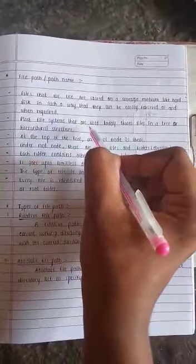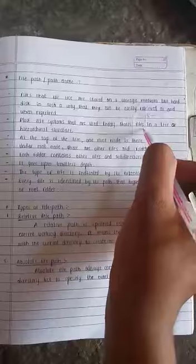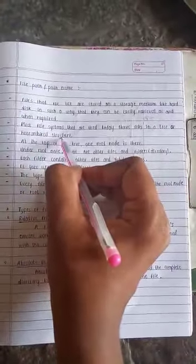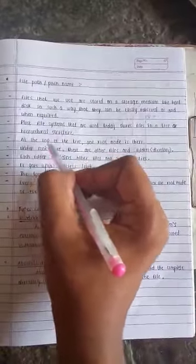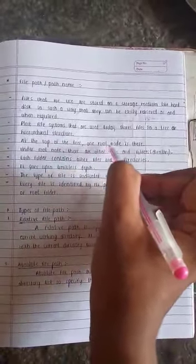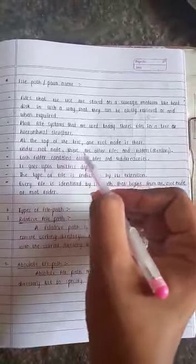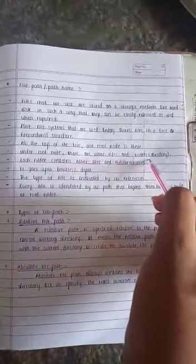Most file systems that are used today store files in a tree or hierarchical structure. At the top of the tree, a root node is there. Under root node there are other files and folders.